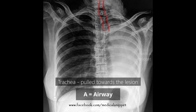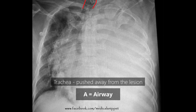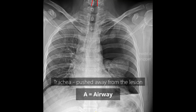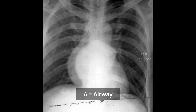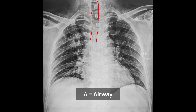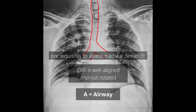If the trachea is pulled towards the lesion, it may be due to fibrosis of the lung. If the trachea is pushed away from the lesion, it may be due to massive pleural effusion or tension pneumothorax. One has to see also for splaying of carina. Splaying of carina is seen in left atrial enlargement. Before commenting on tracheal deviation, one should make sure that the chest x-ray is well aligned and not rotated.